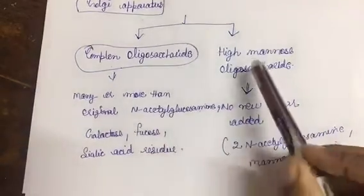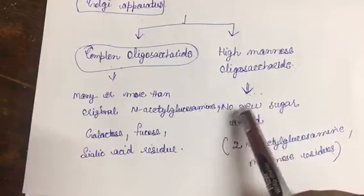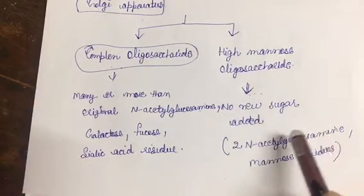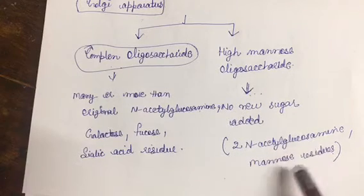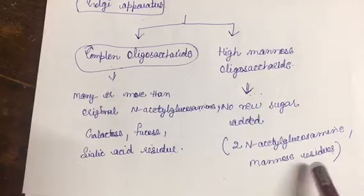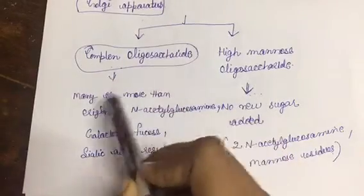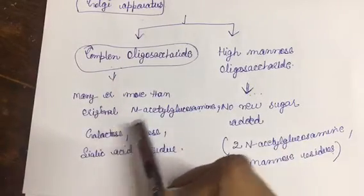And there are two N-acetylglucosamines, which are parental, and mannose residues are there. And in complex oligosaccharide, many or more than two - because original two N-acetylglucosamine residues were there.